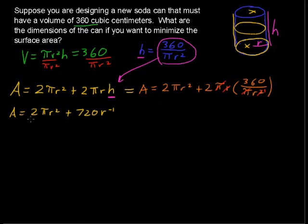Now, what we're going to do is this is the function that gives us the surface area of the can in terms of the radius. So we want to minimize the area. That's what we're asked to do. Minimize the area.